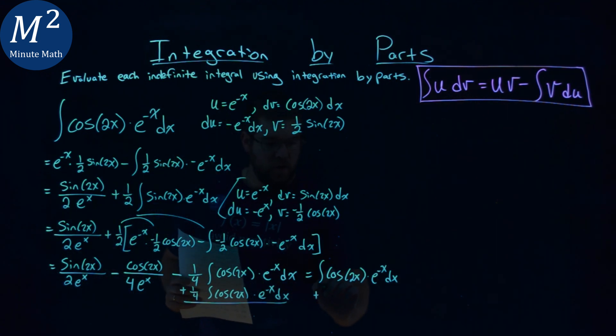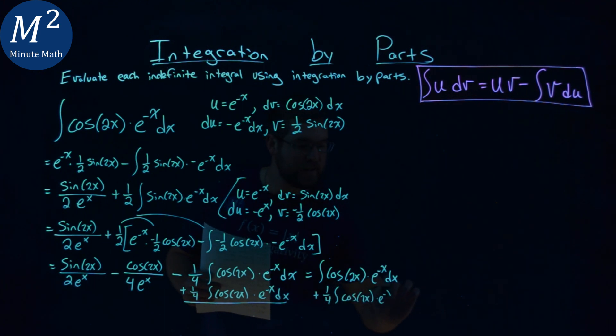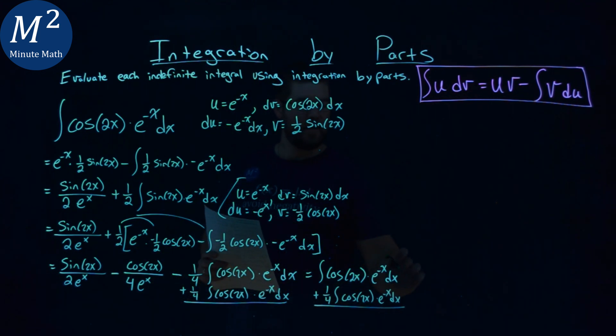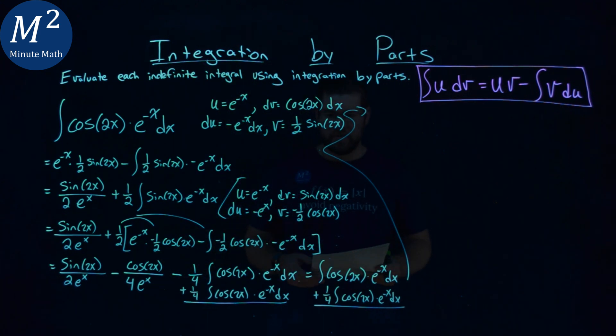Add it again. One-fourth integral of cosine of 2x times e to the negative x dx to both sides. What happens? Let's go. That whole thing we're putting up here. Add it to both sides. We'll bring this back to the left-hand side to make it easier to see.